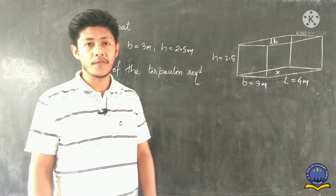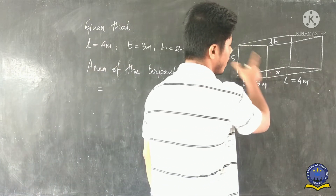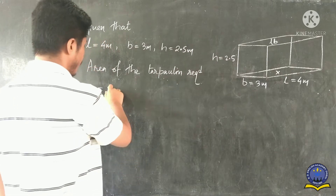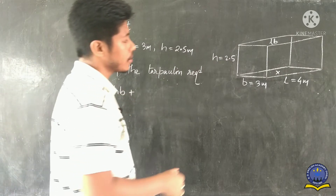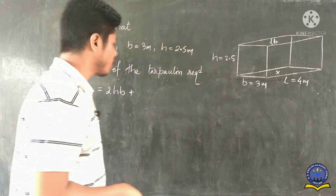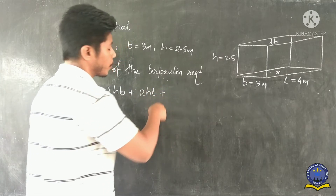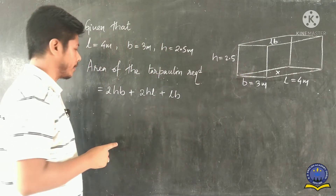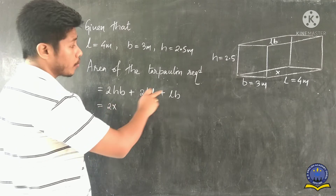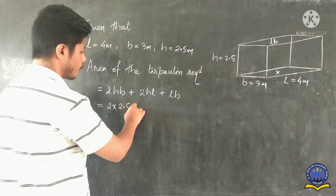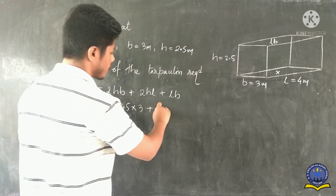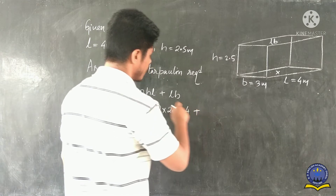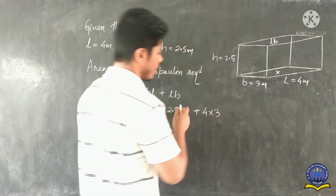We apply the surface area of cuboid formula but ignore the bottom part. The formula is: 2×(height×breadth) + 2×(height×length) + length×breadth. Substituting values: 2×(2.5×3) + 2×(2.5×4) + (4×3).